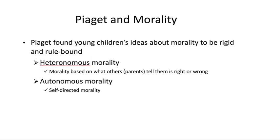Piaget called this the heteronomous morality stage — morality incumbent upon some kind of external force or compass, often based on avoidance of punishment or maximizing of pleasure. Then he said, later on in the formal operational stage, children begin to develop autonomous morality — a more self-directed moral compass — when the child begins to think abstractly about what is right and what is wrong.